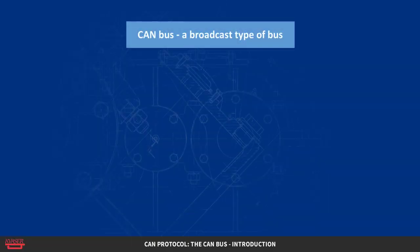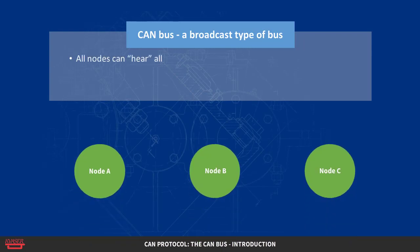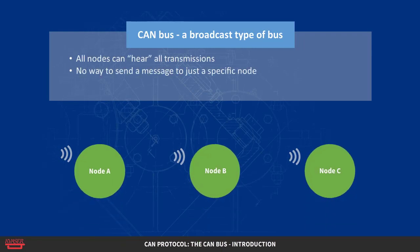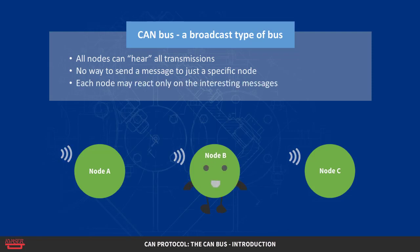The CAN bus is a broadcast type of bus. This means that all nodes can hear all transmissions. There is no way to send a message to just a specific node — all nodes will invariably pick up all traffic. The CAN hardware, however, provides local filtering so that each node may react only on the interesting messages.